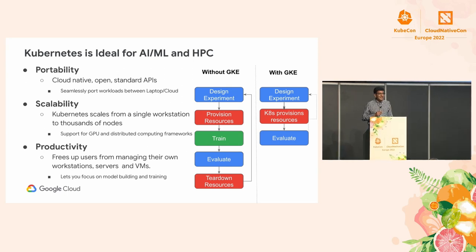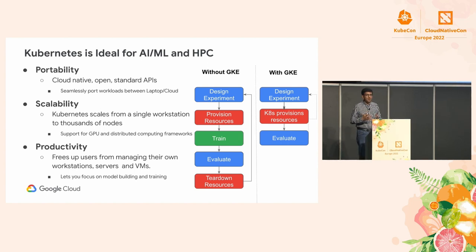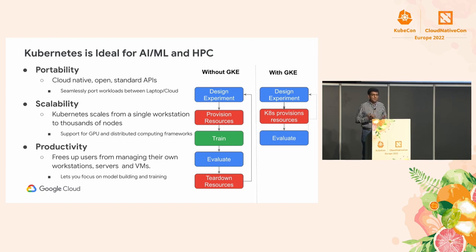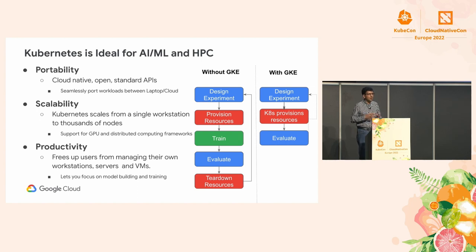Kubernetes can seamlessly scale from a single node to thousands of nodes. It supports auto-scaling, auto-provisioning, GPUs, TPUs, and many other advanced features that allow very large-scale training and inference. Third is productivity. Kubernetes makes practitioners more productive by freeing them from having to manage underlying resources and compatibility issues, so they can focus on their core business mission — be it training, serving, or high-performance computing.